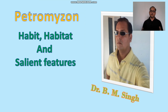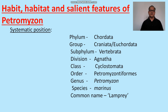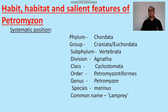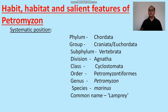Good morning students. Today we discuss Petromyzon, its habit, habitat, and salient features. First, its classification: the systematic position is Phylum Chordata, group Craniata because the cranium or brain box is present. Sub-phylum Vertebrata because the notochord is modified into the vertebral column. Division Agnatha, meaning jaws are absent. Class Cyclostomata — cyclo means rounded, stoma means mouth. Order Petromyzontiformes, genus Petromyzon.